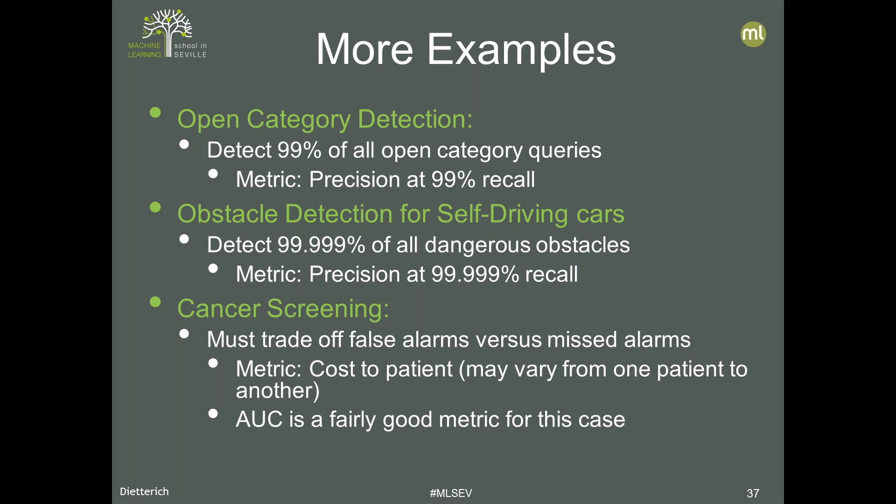For open category detection wanting to catch 99% of queries from a new category, we'd want precision at 99% recall. For obstacle detection for self-driving cars, 99% isn't nearly good enough — you'd need perhaps 99.999% detection of all dangerous obstacles. For cancer screening, we need to trade off false alarms versus missed alarms, and the metric is probably something like the cost per patient, which may vary. Area under the ROC curve is actually a fairly good metric in the medical case — the medical community was one of the first to adopt it.